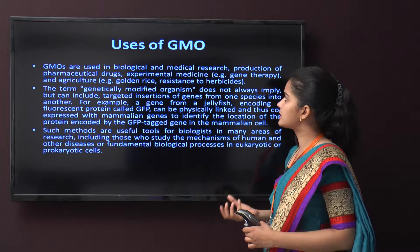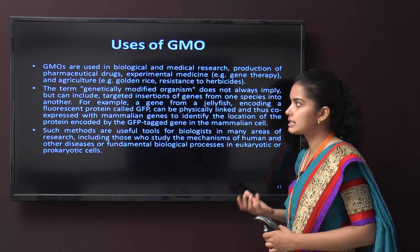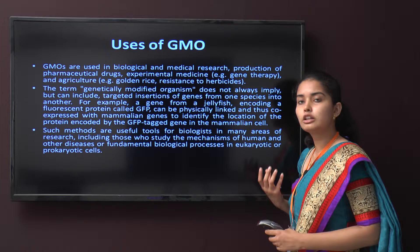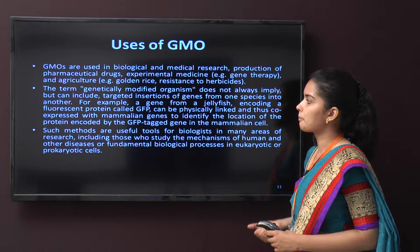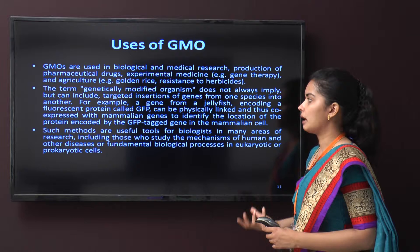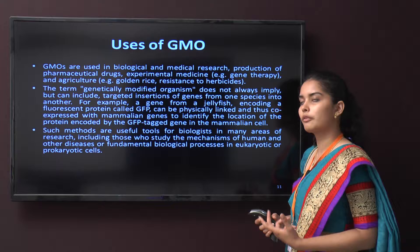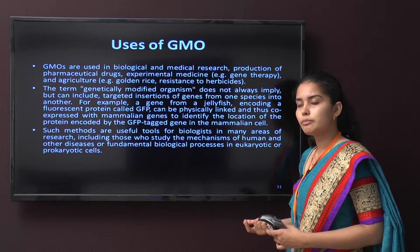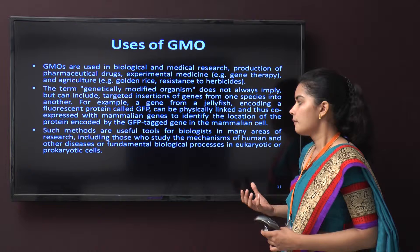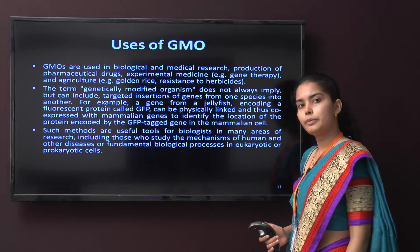Examples include golden rice and herbicide-resistant crops. The term GMO can include targeted insertion of a gene from one species into another. For example, the gene from a jellyfish encoding the fluorescent protein GFP can be physically linked and co-expressed with mammalian genes to identify the location of the protein encoded by the GFP-tagged gene in mammalian cells. Such methods are tools for biologists studying human and other diseases and fundamental biological processes in eukaryotic and prokaryotic cells.